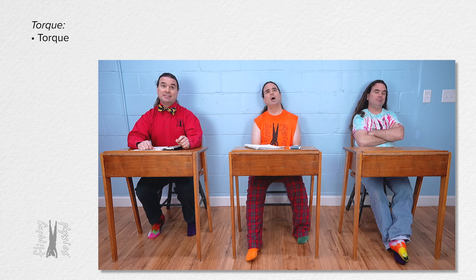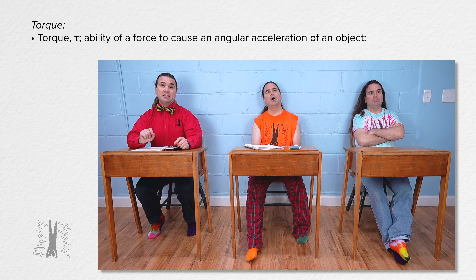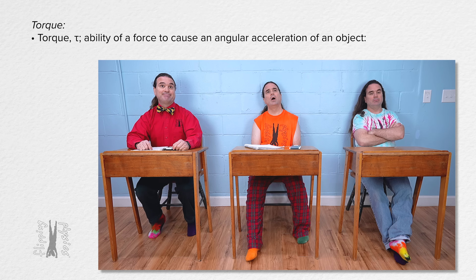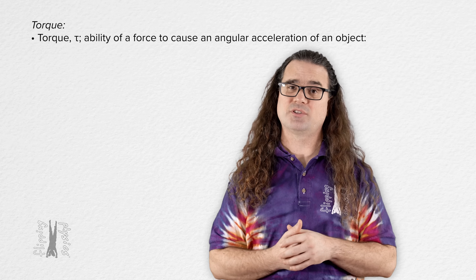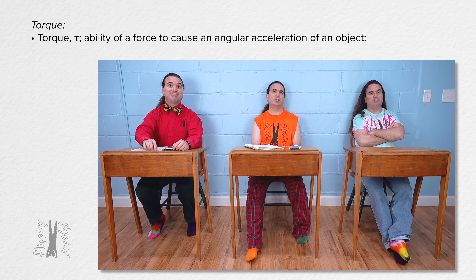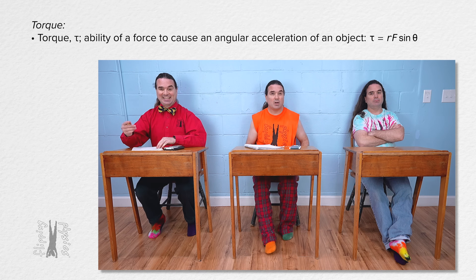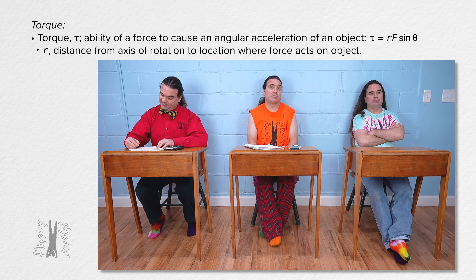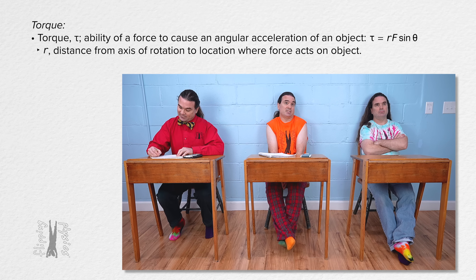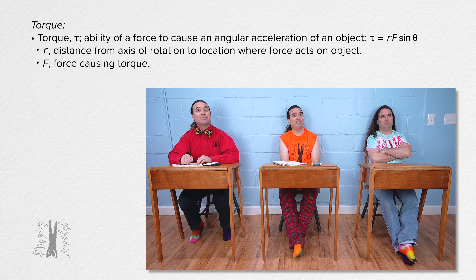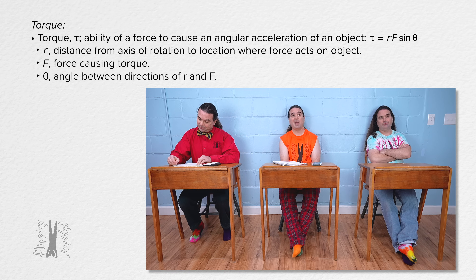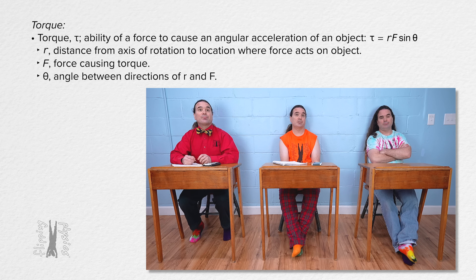Billy, what is torque? Torque, for which the symbol is lowercase tau, is the ability of a force to cause an angular acceleration of an object. Bobby, what is the equation for torque? The equation for torque is torque equals r — the distance from the axis of rotation to the location where the force acts on the object — times F, the force causing the torque, times the sine of theta, where theta is the angle between the directions of r and F in the torque equation.